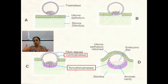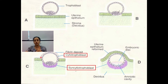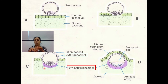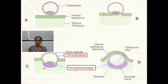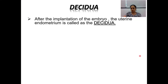The syncytiotrophoblast doesn't have mitotic property — it doesn't undergo division. The cells are replenished by the cytotrophoblast, which has the capacity to divide. The syncytiotrophoblast loses its capacity to divide; its main purpose is to invade the uterine endometrium.